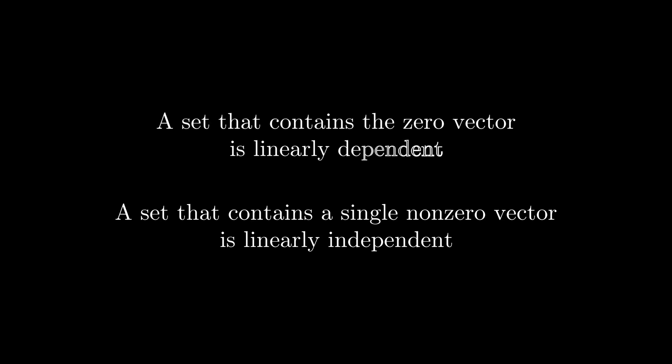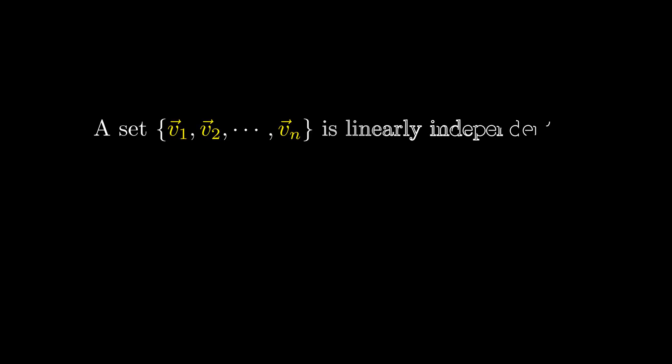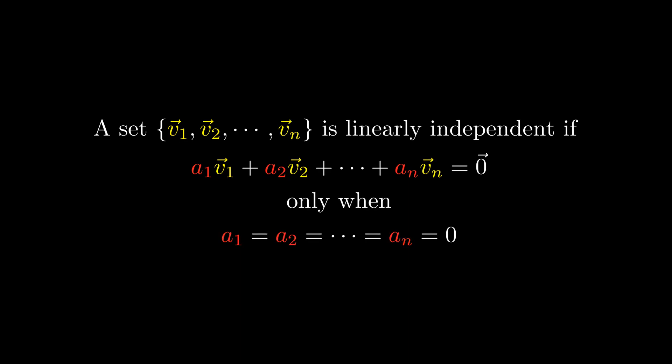When trying to determine if a set is linearly dependent or not, these two rules that we have found can be useful. Now, if you were to look up the definition of linear dependence in other resources, you might realize that they define the concept in different ways from how we did it here. The reason for this is that while the traditional definitions might be less intuitive, they are often easier to work with than the definition that I gave. While we might not use these other definitions much, I do at least want to cover them, so I'll quickly describe them here.